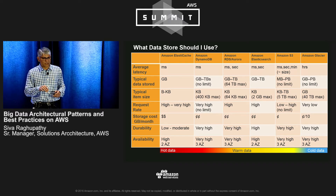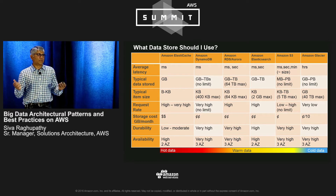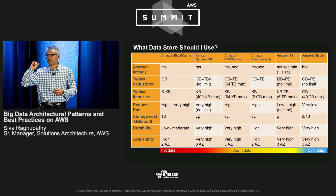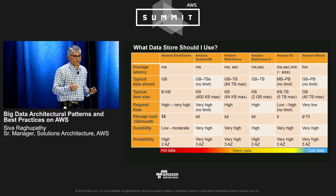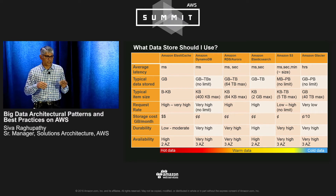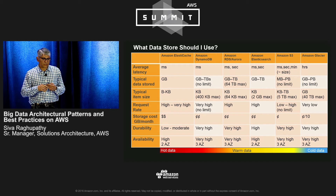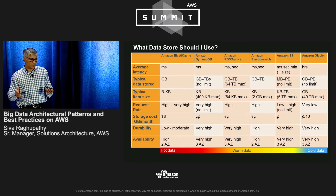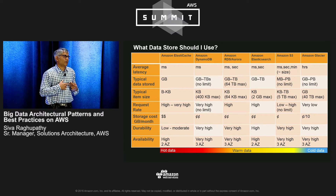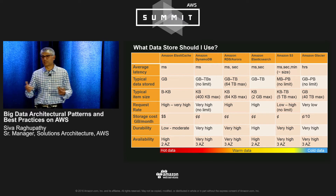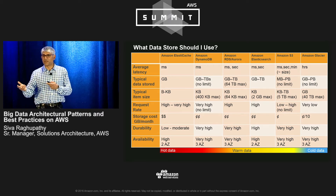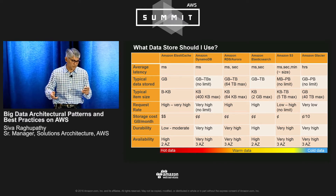In terms of availability: DynamoDB keeps your data in three availability zones. Whenever you do a put, data gets automatically written to at least two machines in two data centers before the put returns in about three milliseconds. ElastiCache is a two-AZ scenario. RDS Aurora has three-AZ availability as well. Most of these are highly available. One important note: some customers put their entire dataset in Redis and call it the database — I don't consider Redis a database, it has scope for failures. Best practice is to keep data in DynamoDB and maintain a cache in Redis or Memcache.